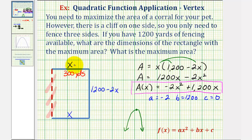Now that we know x is 300, we can actually find the length of this side by subbing 300 for x. If x is 300, we would have 1,200 minus 2 times 300, which is 600. 1,200 minus 600 is 600. So this length here would have to be 600 yards.